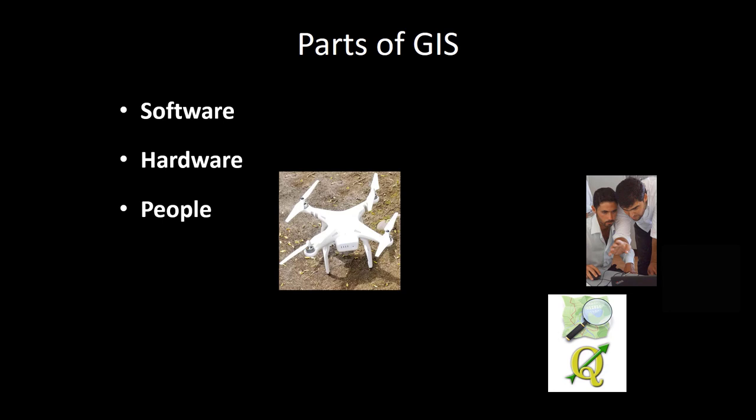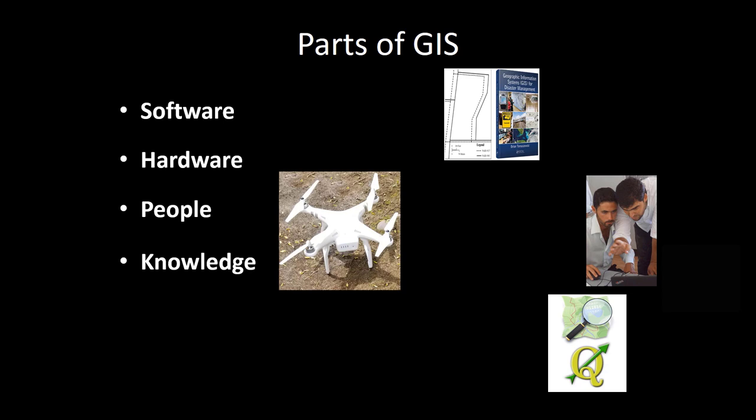People that work with GIS in a variety of capacities, such as using GIS to make decisions like people living in refugee camps. Knowledge, which is perhaps the most abstract part of GIS, but is equally important as the other parts. Knowledge, in the context of this discussion, refers to the variety of training, education, skills and experiences that are applicable to GIS. For example, by watching this video, you are gaining new knowledge of GIS.